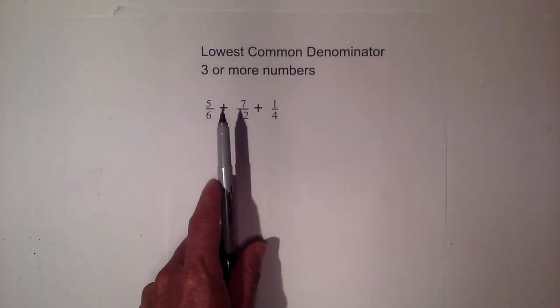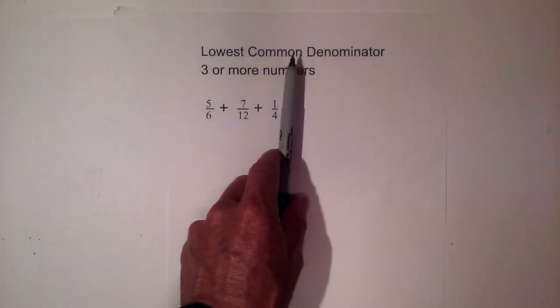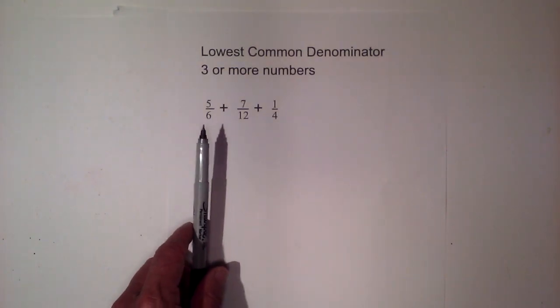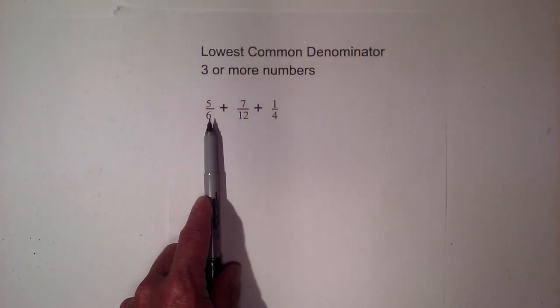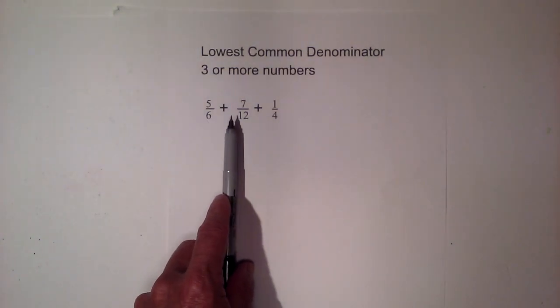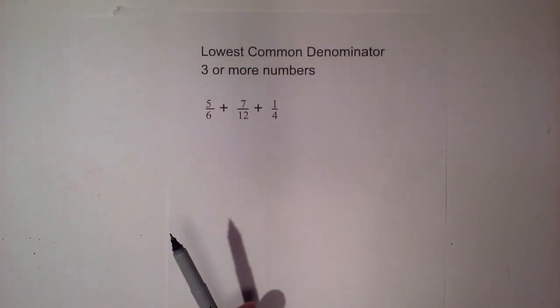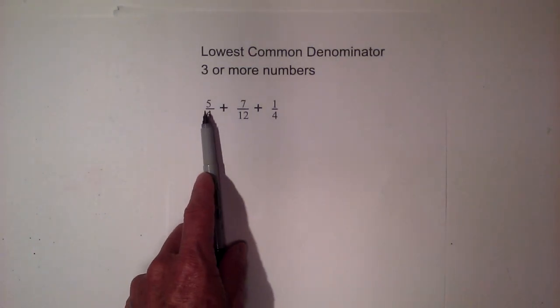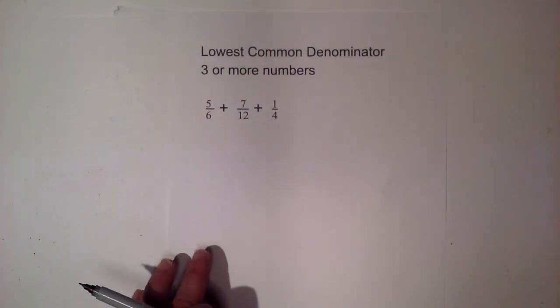In this video let's discover how to find the lowest common denominator of 3 or more numbers. The lowest common denominator is the smallest number these 3 numbers 6, 12, and 4 will divide into evenly. In order to add the fractions you need a lowest common denominator. So let's get started.